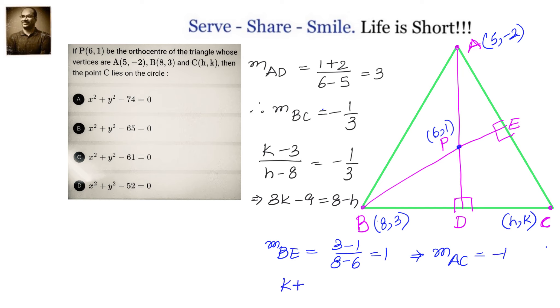Therefore, slope of AC will be negative reciprocal of this, that means it will be minus 1. But what is slope of AC? Nothing but K plus 2 by H minus 5, and that should equal minus 1. When we simplify this, we will get H plus K equals 3.